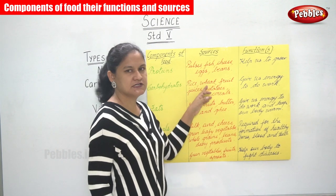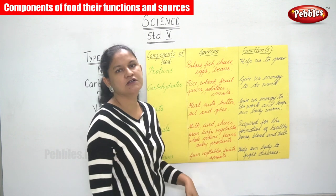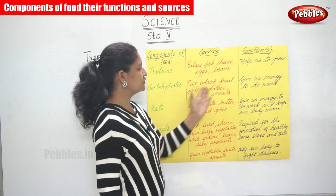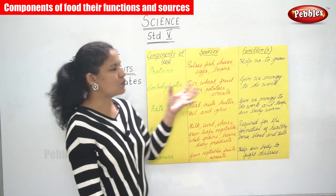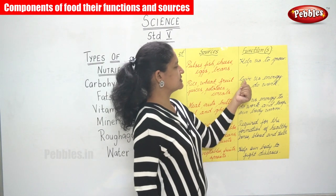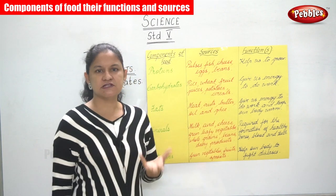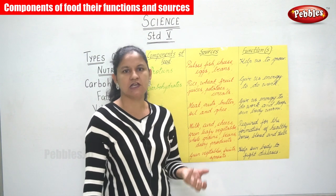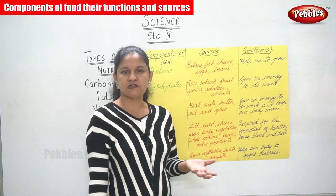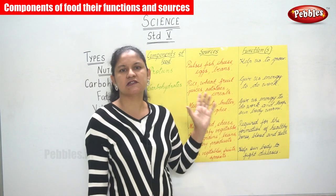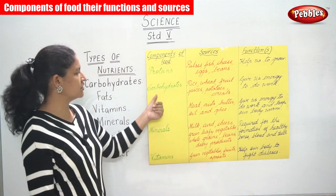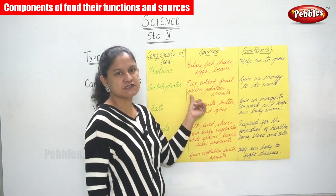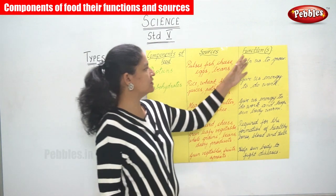The next component is carbohydrates. The sources are rice, wheat, fruit juices, potatoes, and cereals. The function of carbohydrates is they give us energy to do work. We need a lot of energy because by playing, running, or doing work we drain out all the energy accumulated in our body. So we need to consume carbohydrates because they give us the energy and stamina to do work.